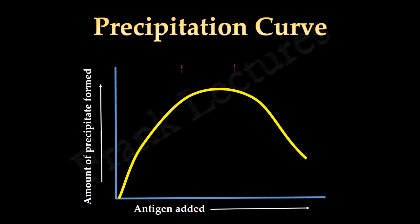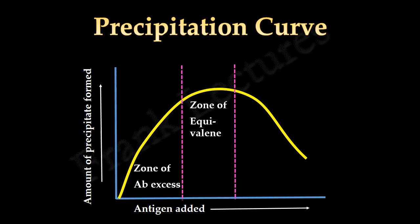For further understanding, this graph can be divided into three zones. Zone of antibody excess, zone of equivalence, and zone of antigen excess.